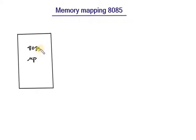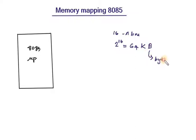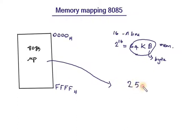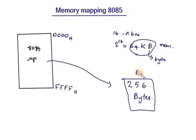Suppose this is an 8085 microprocessor which has 16 address lines, so it has 2 raised to 16, that is 64 KB. The maximum memory that can be allocated by this 8085 microprocessor is 64 KB, with an address range of 0000H to FFFFH. Now suppose I am connecting a 256-byte RAM chip to this microprocessor.